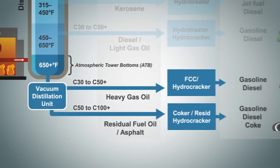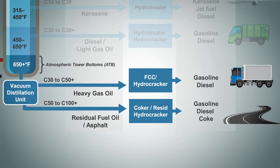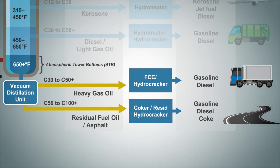Typically, there are two fractions that leave the vacuum distillation unit. The first is a heavy gas oil fraction that is sent to other refinery units for conversion to gasoline or diesel, and the second is the heaviest portion of the crude oil, which can be sold into the asphalt market, and it can also be blended into fuel oil or further upgraded to make lighter products.